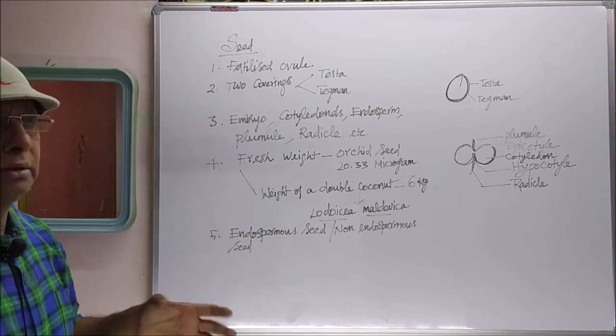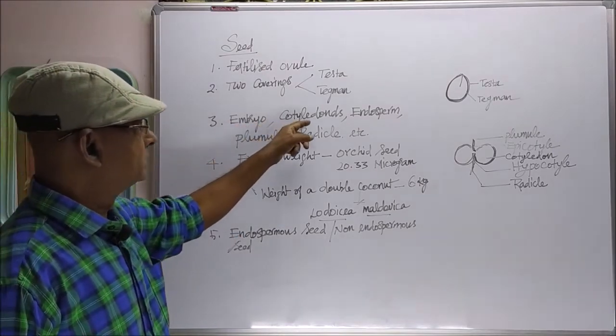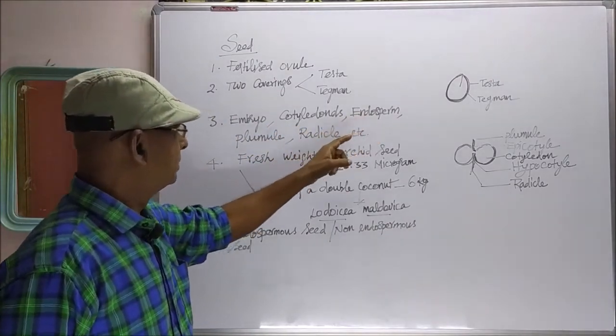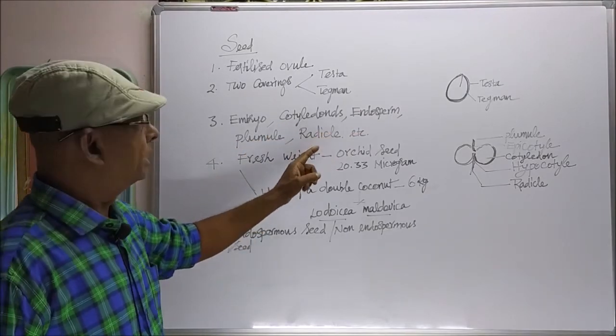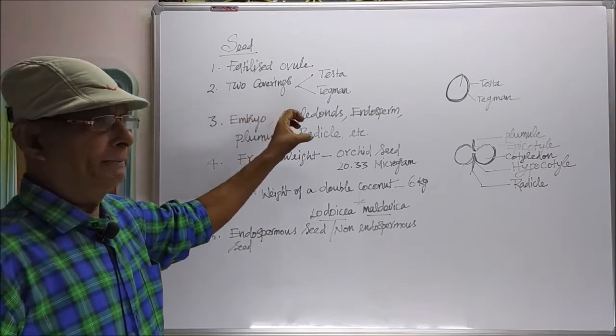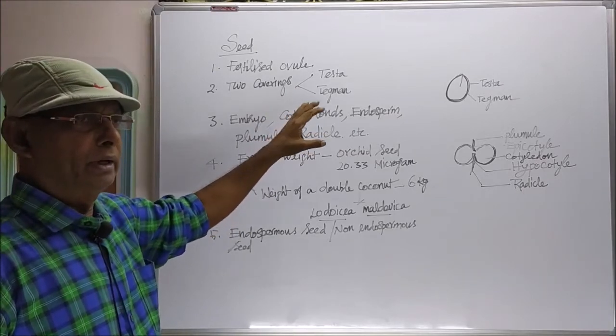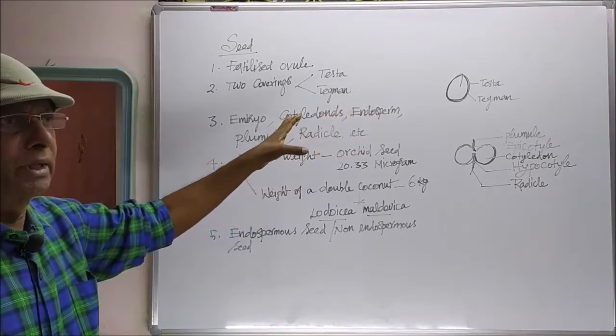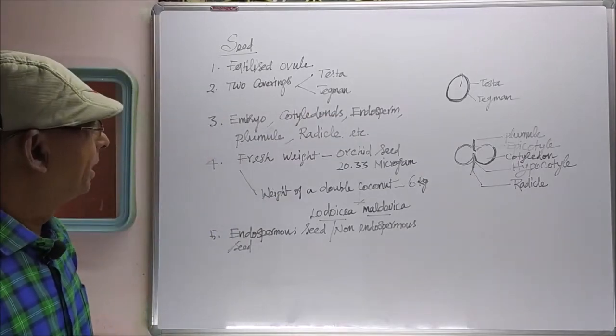If you dissect the seed internally, you can see the following parts: embryo, cotyledons, plumule, radicle, etc. In some plants, endosperm may be absent or present; that is according to the types of the seed.